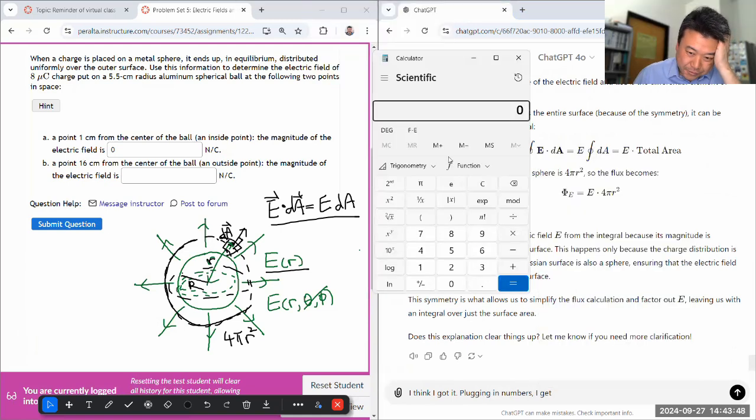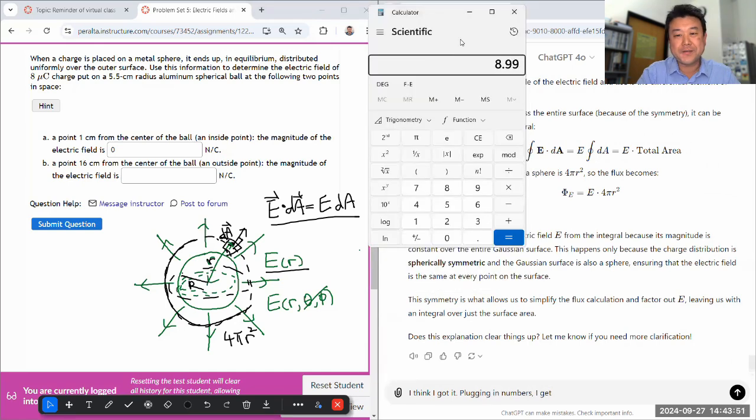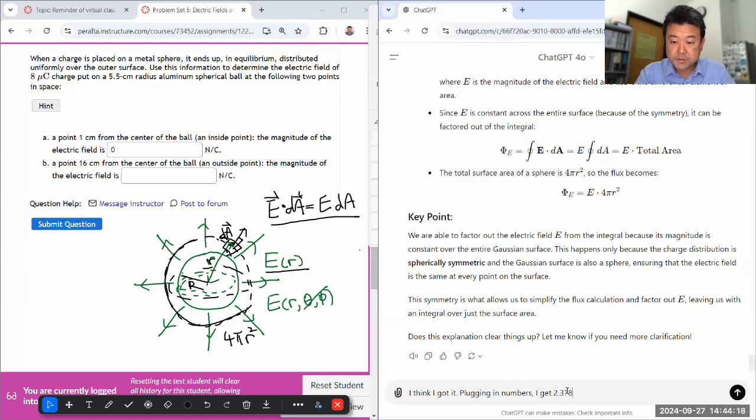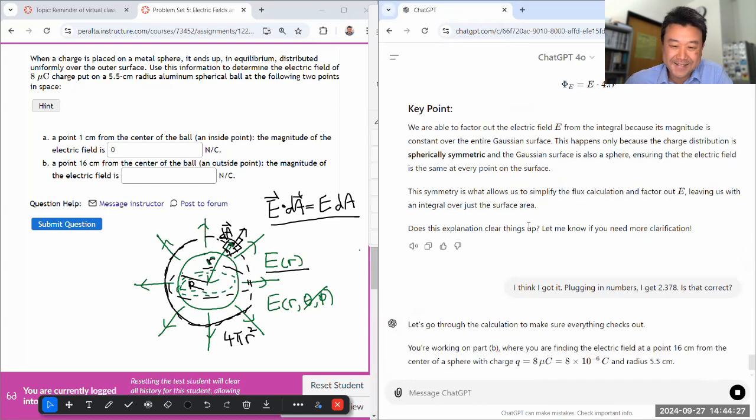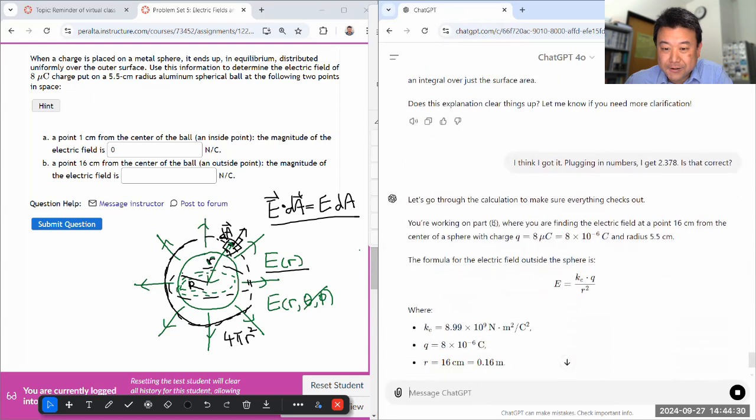Everything checks out. Working on part B. Oh, I used the radius of the sphere. I got it. Let me put this in 0.808. You should double check.